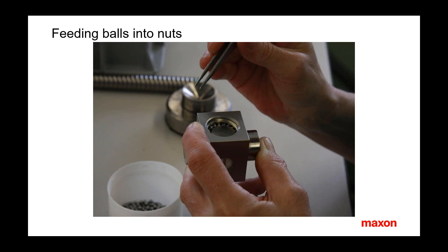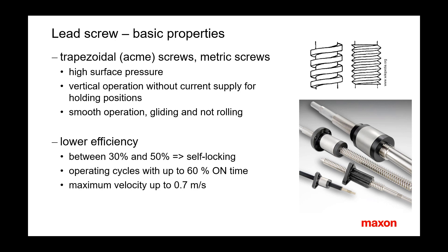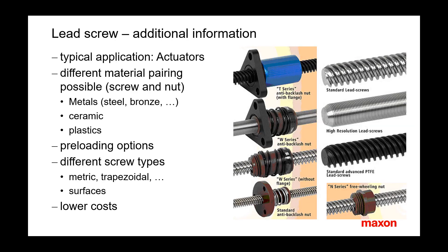This picture gives an impression of how the balls get into the nut. The main properties of lead screws are a consequence of the gliding friction between nut and screw. It results in higher surface pressure and an efficiency considerably lower compared to ball screws. Often, as a result, you get self-locking. The material pairing of nut and screw is of great importance, and a wide variety of lead screws exist. As a rule, however, lead screws are less expensive than ball screws.